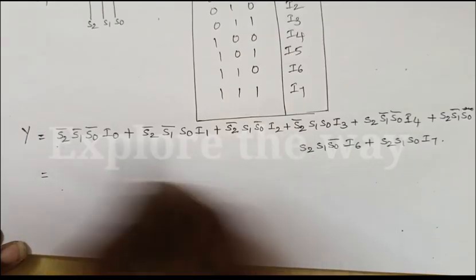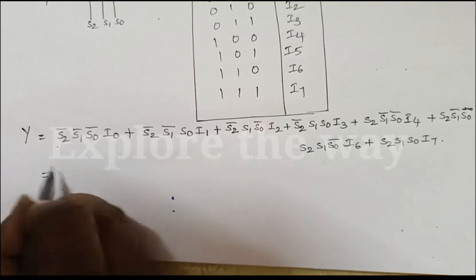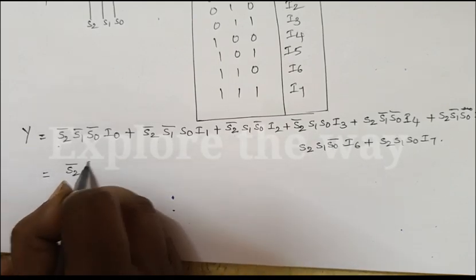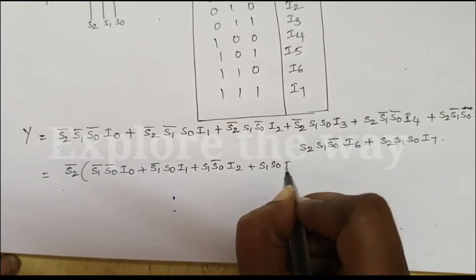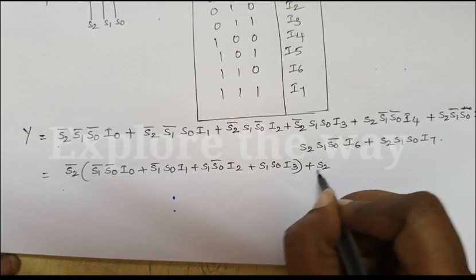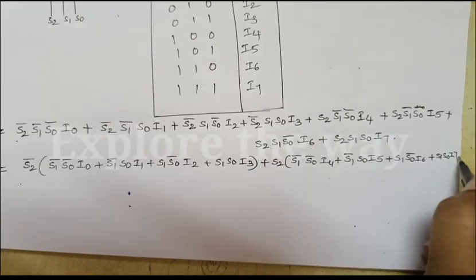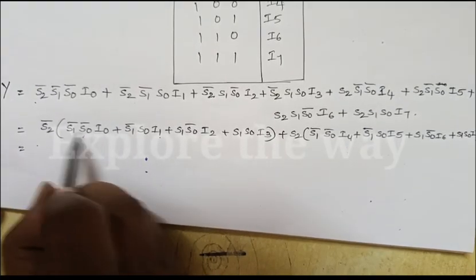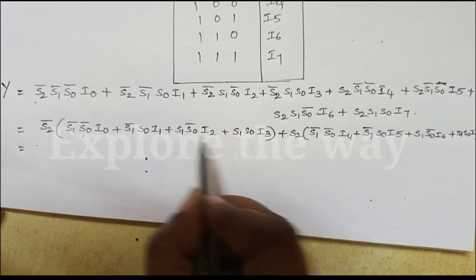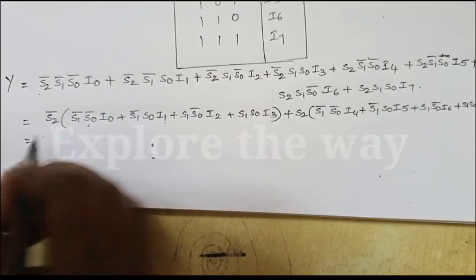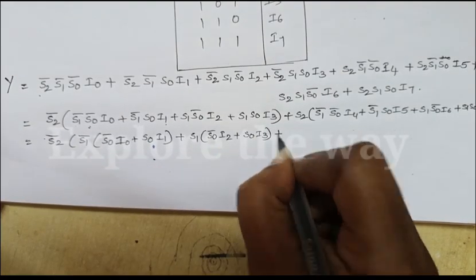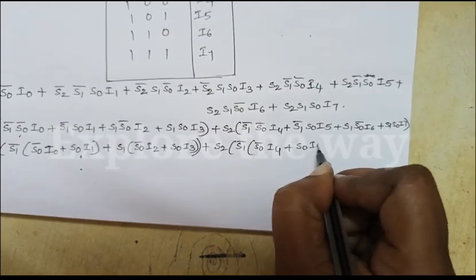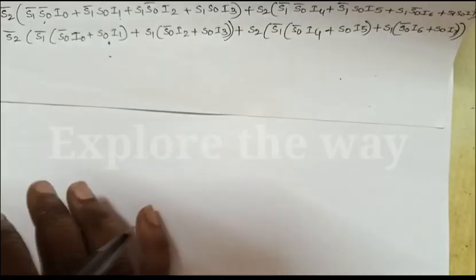From the full expression, we can group terms by factoring out common select line combinations to simplify the Boolean expression for the multiplexer output.